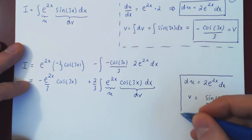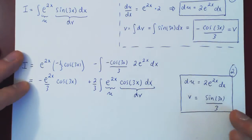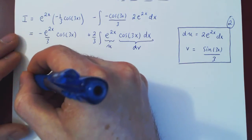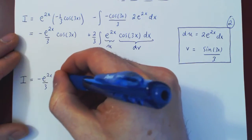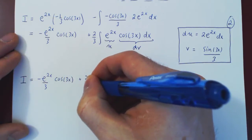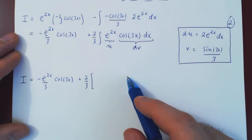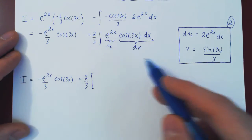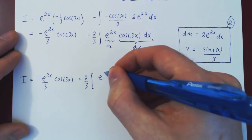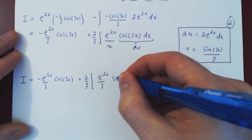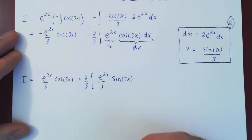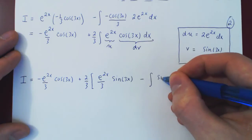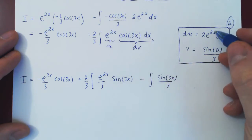Now that we have what we need, we perform our second application of integration by parts. I is equal to negative e to the 2x over 3 cosine of 3x, plus two-thirds times the bracket: u times v, which is e to the 2x over 3 times sine of 3x, minus the integral of v du, which is sine of 3x over 3 times 2e to the 2x dx.